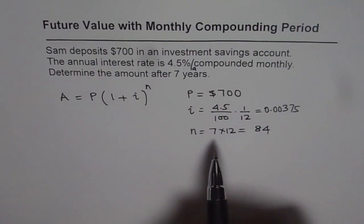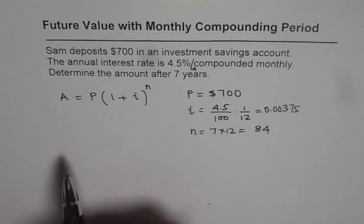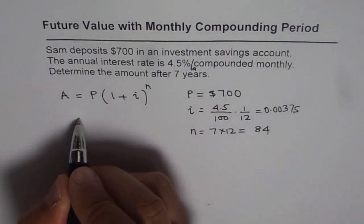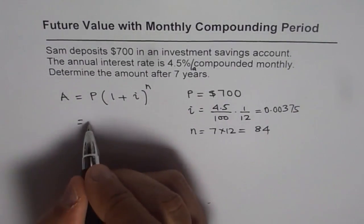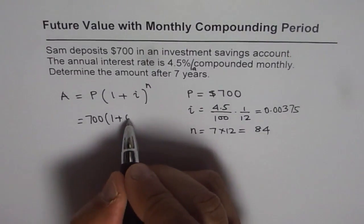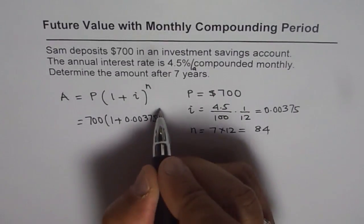It is very important to understand the significance of each variable here. Now we can calculate the future value A as equal to P is 700, times 1 plus I is 0.00375, to the power of N is 84.